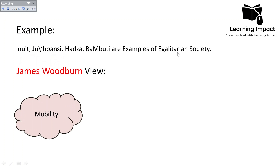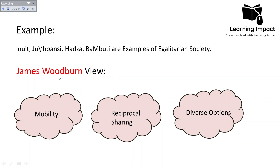James Woodburn gives some views about how these societies remained egalitarian. The first reason is mobility: these societies were mostly mobile, moving from one place to another in search of richer environments or to escape seasonal extremes. Accumulation of wealth was not possible in a mobile society, since these societies did not believe in property ownership — it was obviously impossible for them to move property from one place to another.